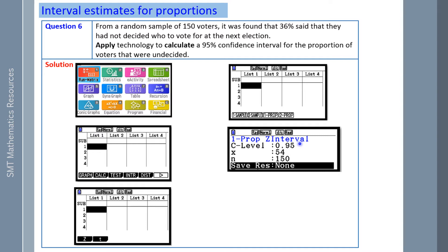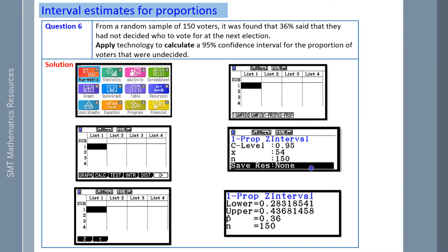So now we have a one proportion Z interval where I want to make the confidence interval 95%. The number of successes was 54. How did I work that out? 36% of the 150 voters. N is 150. We then press ENTER for EXEC and our interval is our lower is about 28% and our upper is about 44%.